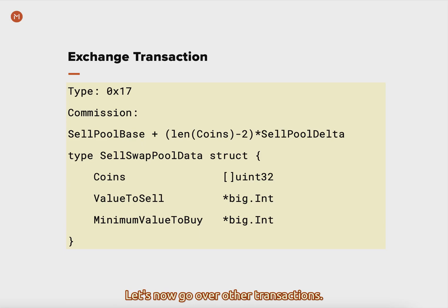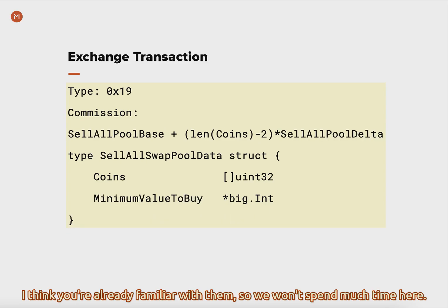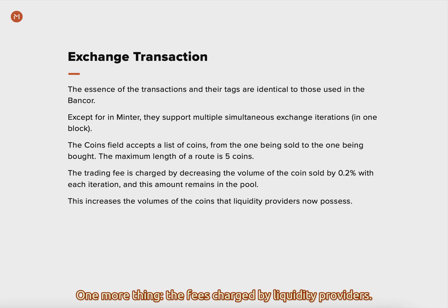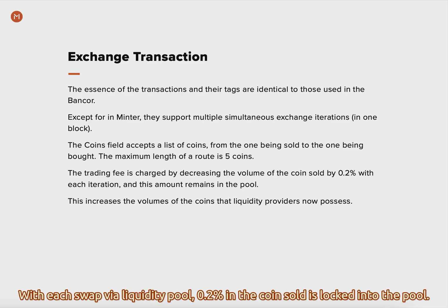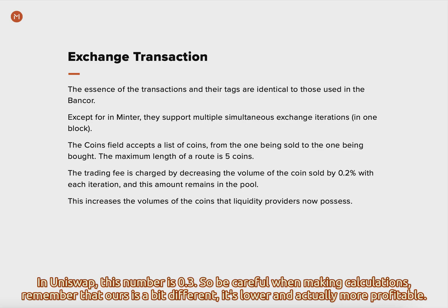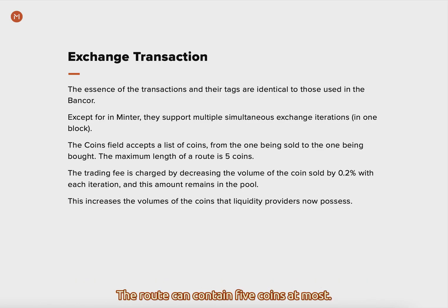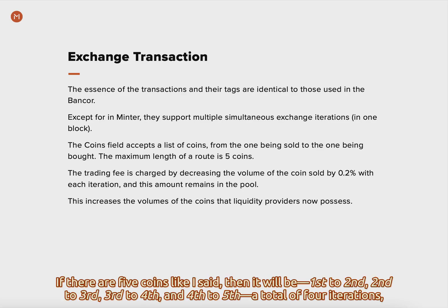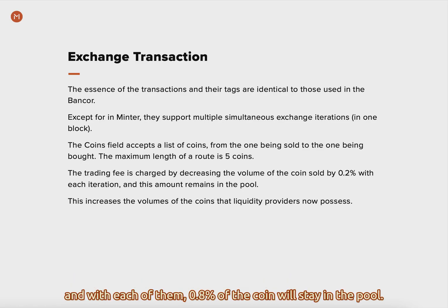Let's go over other transactions briefly, as you're likely already familiar with them. One more thing: the fees charged by liquidity providers. With each swap via liquidity pool, 0.2% in the coin sold is logged into the pool. In Uniswap, this number is 0.3, so be careful when making calculations — ours is a bit different; it's slower but actually more profitable. The route can contain 5 coins at most. If there are 5 coins, it will go 1st to 2nd, 2nd to 3rd, 3rd to 4th, and 4th to 5th — a total of 4 iterations. With each of them, 0.8% of the coin will stay in the pool.